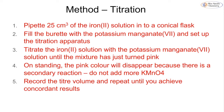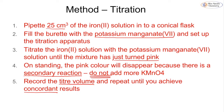For the titration, we take a 25 cm³ sample of our iron solution, fill our burette with potassium manganate, and set up our titration apparatus. We titrate the solution until the mixture has just turned pink — remember this is self-indicating. When left to stand the pink color may disappear due to a secondary reaction; do not add more potassium manganate. We record the titer volume and repeat until we get concordant results. The rough titration should never be used in calculations — concordant means within 0.2 cm³ of each other.